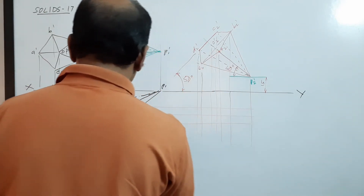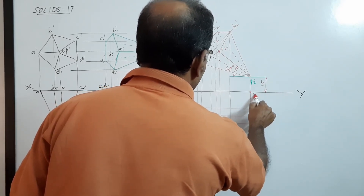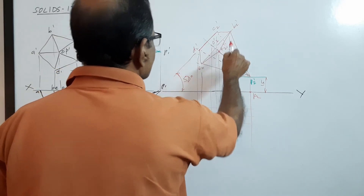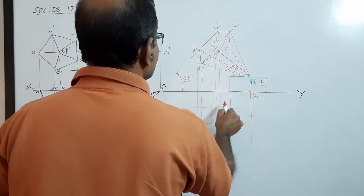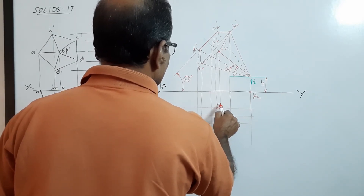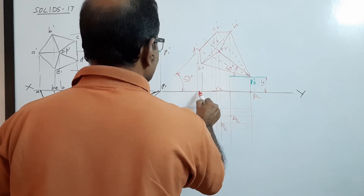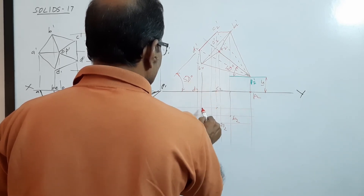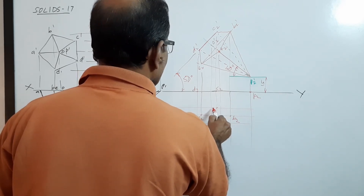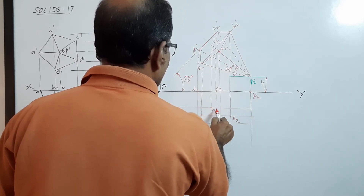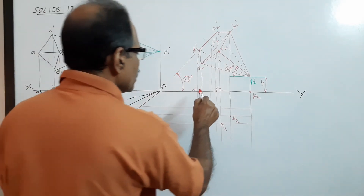Draw a new plan. Label the points: A2, P2, D2, C2, D2, E2, O2. All the points — you are looking from the top, the base will be visible.